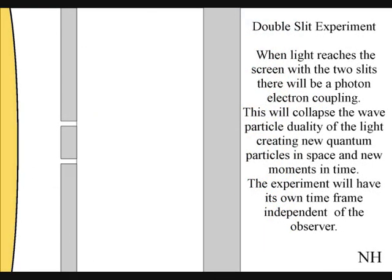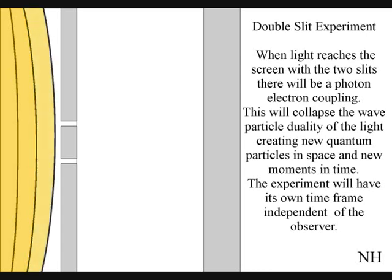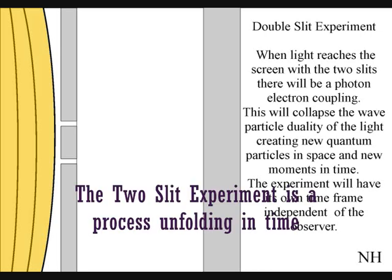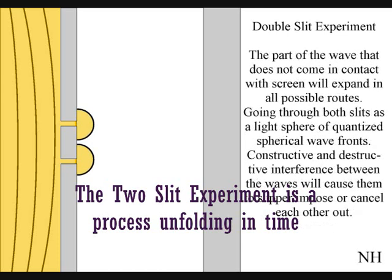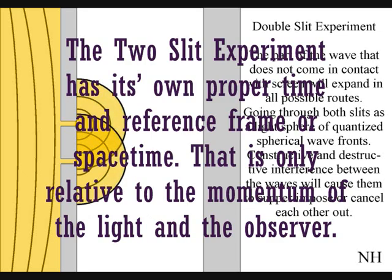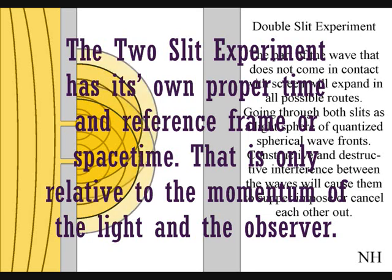The only way to see this happen directly by light is in the two-slit experiment. When the waves reach the screen with the two slits, they will react with the electrons of the screen. This will collapse the wave-particle duality of the light, creating new quantum particles in space and new moments in time. The part of the wave that does not come in contact with the screen will expand in all possible routes, going through both slits as two wave fronts.